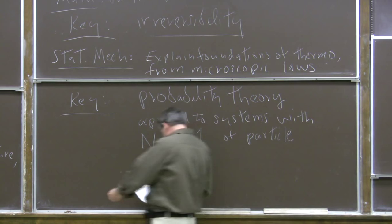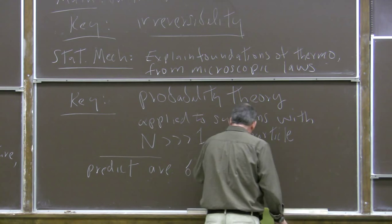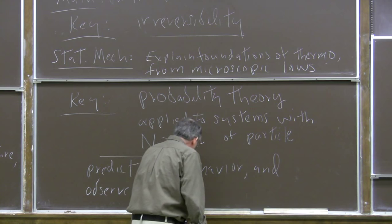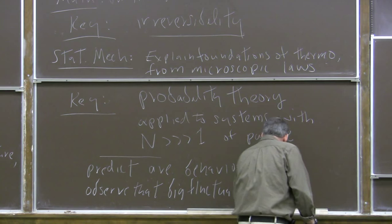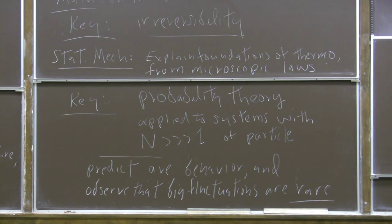So the average behavior is a very good predictor of how the system will behave. What we do is predict average behavior and observe — or mathematically show — that big fluctuations, that is, big deviations from average behavior, are rare. For systems with many, many particles, they're actually very rare, so they essentially never happen, and the average behavior really tells us what's going on.